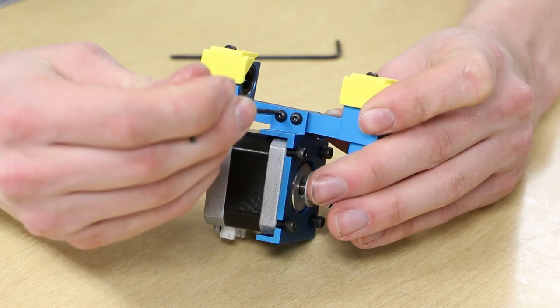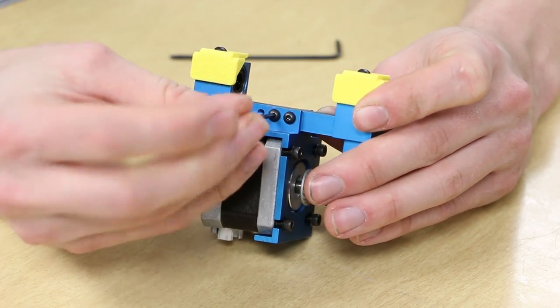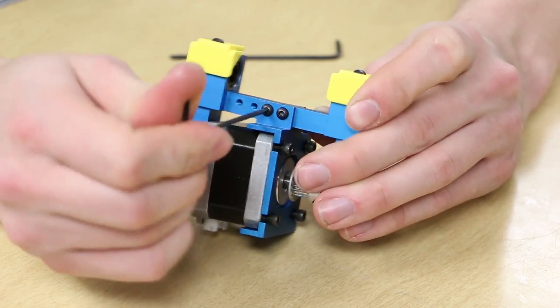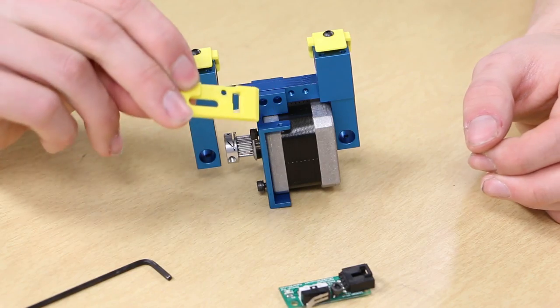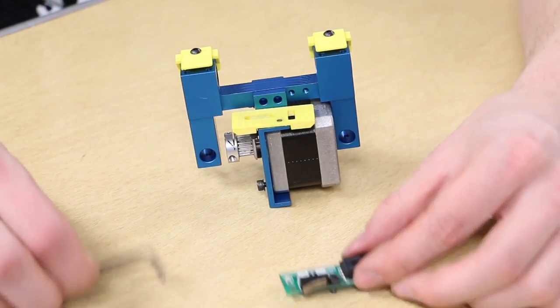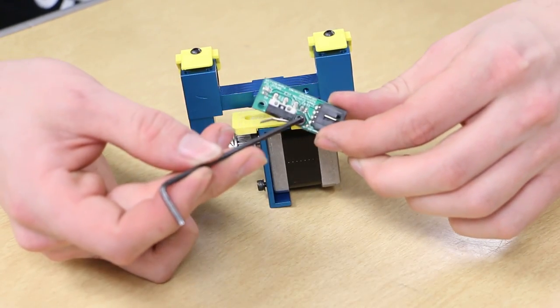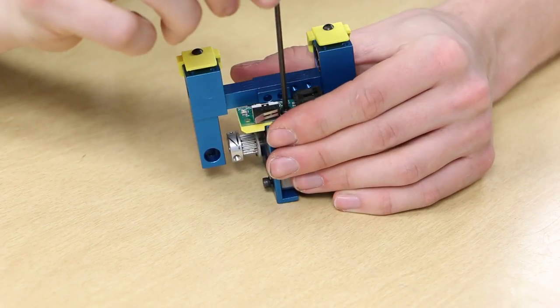Make sure that the linear bracket and motor mount are parallel to each other. Grab the spacer from the kit along with the end stop PCB and its respective screw from earlier. Secure the end stop PCB onto the motor mount.